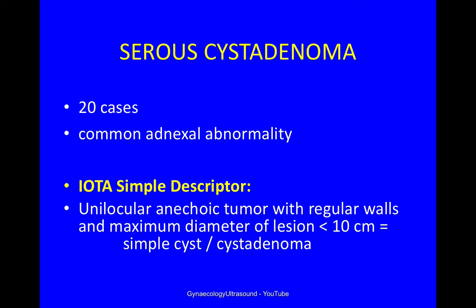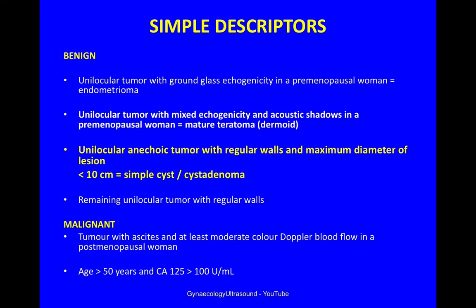When you first see a cyst like this, you might immediately know it's likely to be a serous cystadenoma as it fits one of the IOTA simple descriptors. A unilocular anechoic tumour with regular walls and maximum diameter of less than 10cm is likely to be a simple cyst or cystadenoma. There are 4 benign descriptors and 2 malignant descriptors.